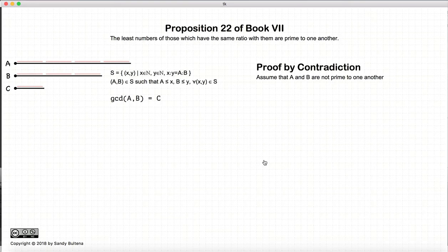However, we are going to assume that the greatest common divisor of A and B is equal to C. So in other words, C measures A, and C also measures B.